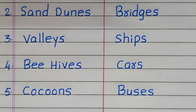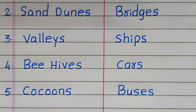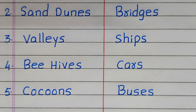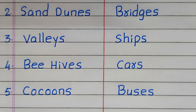Second example of a natural structure is sand dunes. Third, valleys. Fourth, beehives. Fifth, cocoons. Second example of a man-made structure is bridges.